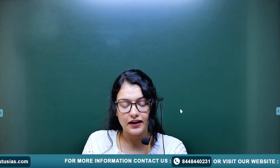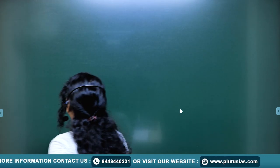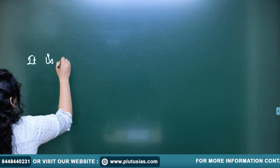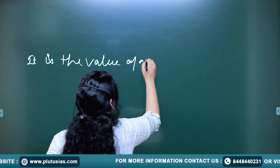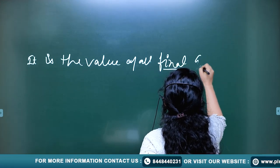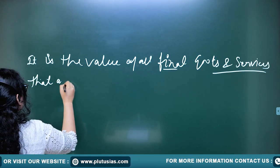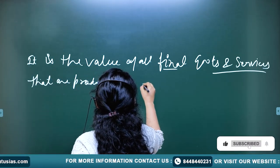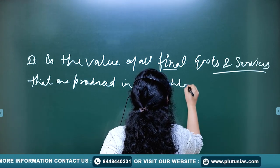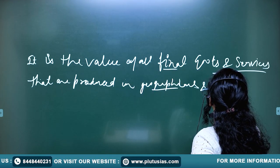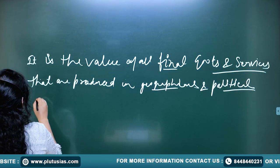It is the value of all final goods and services that are produced in a country in the geographical or political territory in a financial year. This is the definition you will learn. There are two key terms here: geographical and political boundary of a country. These are terms you need to learn.